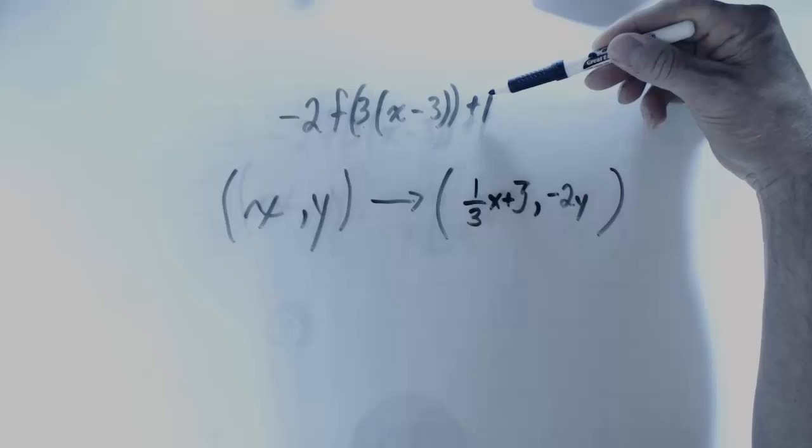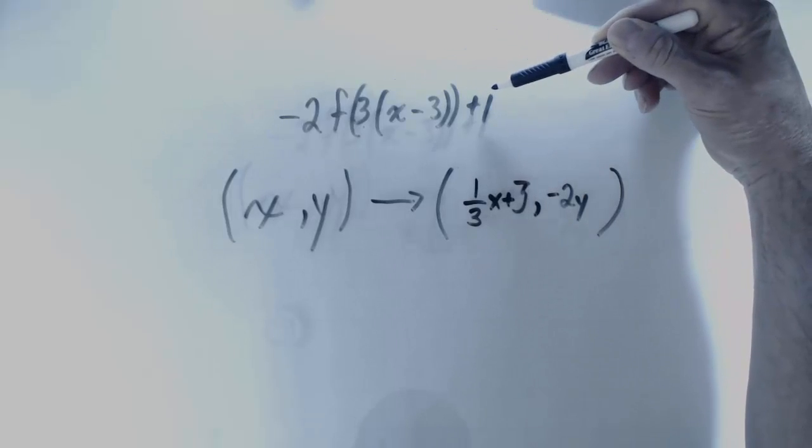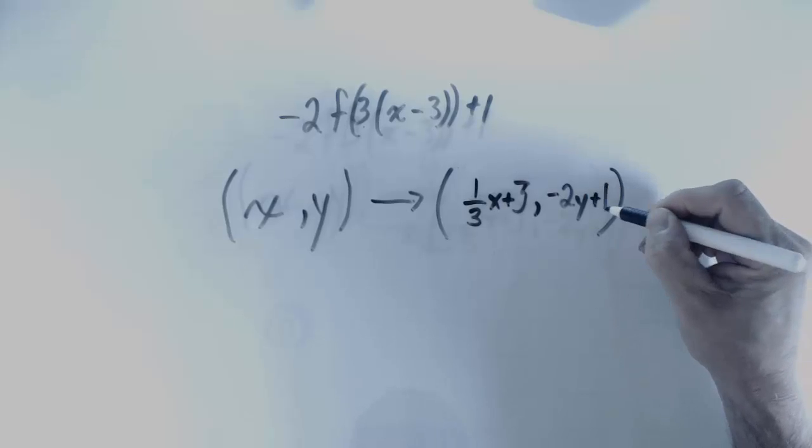And finally, the y coordinate is going to increase by 1 because 1 is being added to the function at the end. So this becomes 2y plus 1.